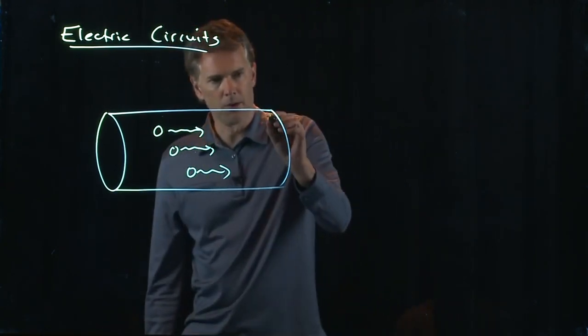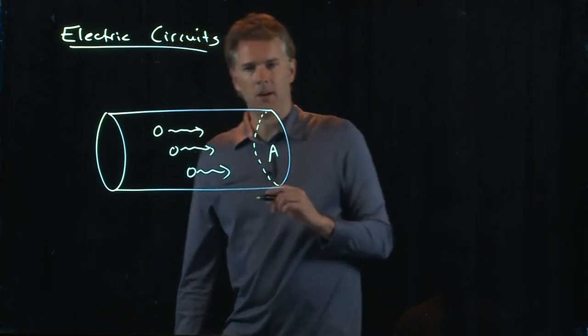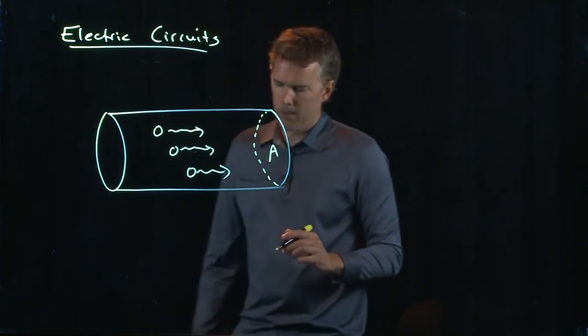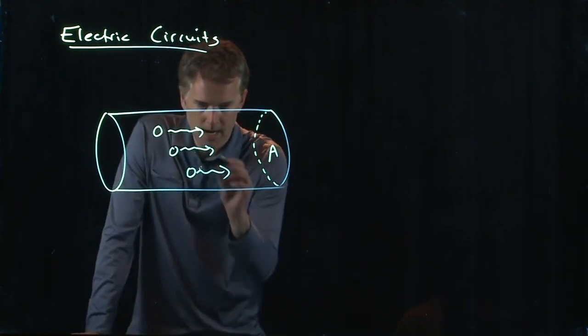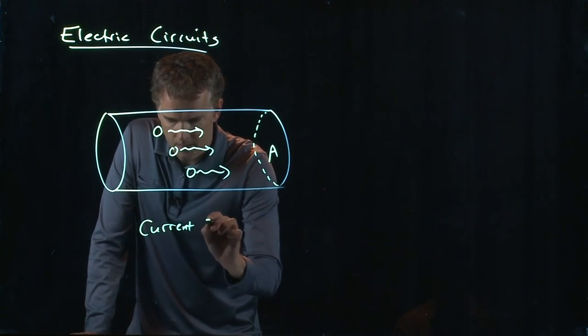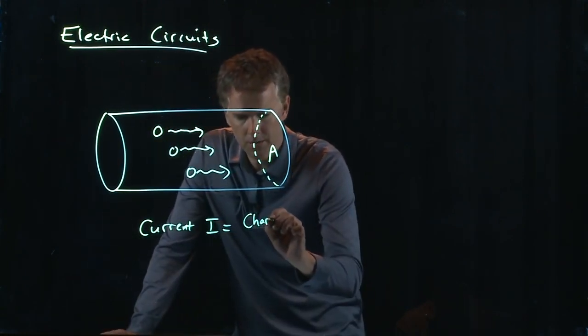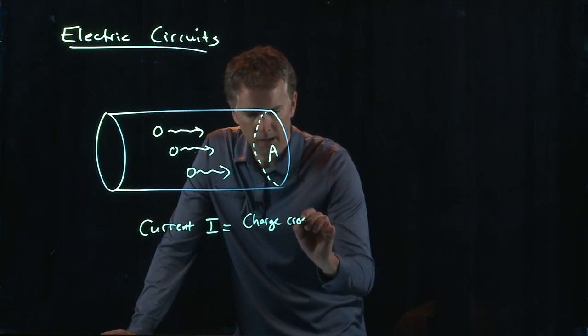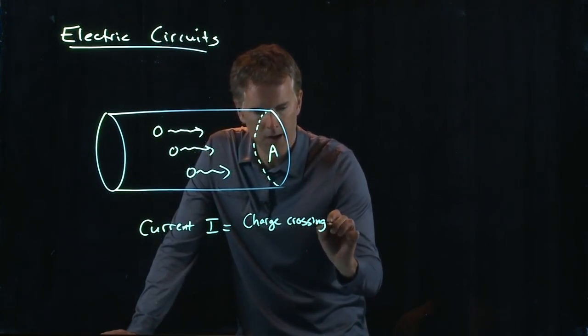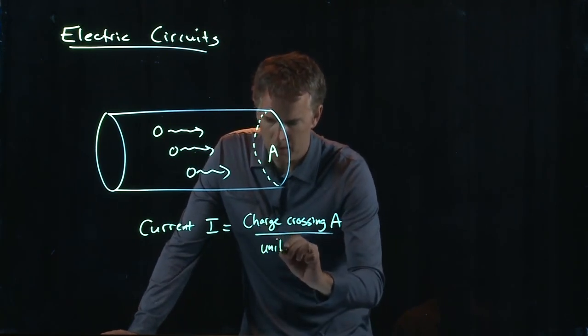If I think about the cross-sectional area A of this wire, then what can we say about this current, i, that's flowing in the wire? The current, i, is equal to the charge crossing that cross-sectional area A in some unit of time.